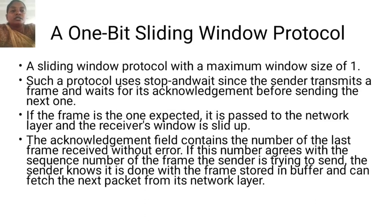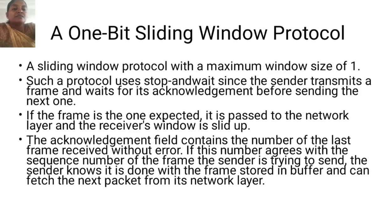A one-bit sliding window protocol. A sliding window protocol with a maximum window size of one uses stop-and-wait, since the sender transmits a frame and waits for its acknowledgement before sending the next one. If the frame is the one expected, it is passed to the next layer and the receiver's window is advanced. The acknowledgement field contains the number of the last frame received without error. If this number agrees with the sequence number of the frame the sender is trying to send, the sender knows it is done with the frame stored in buffer and can fetch the next packet from its network layer.